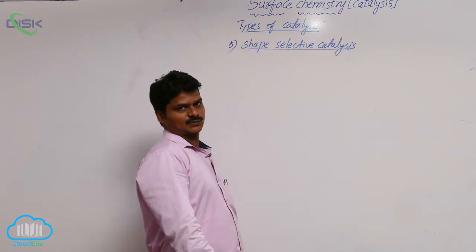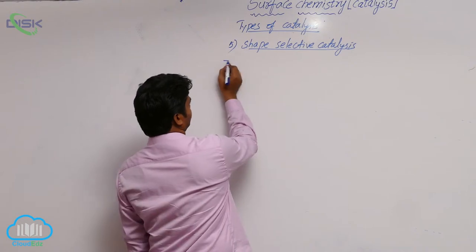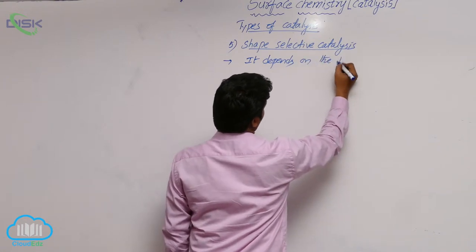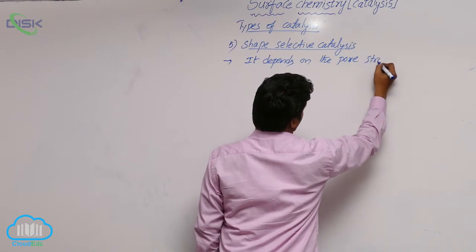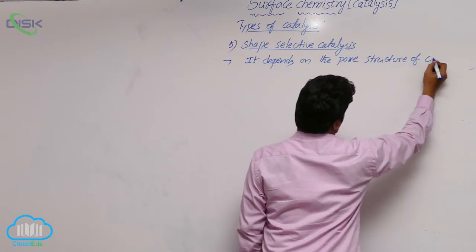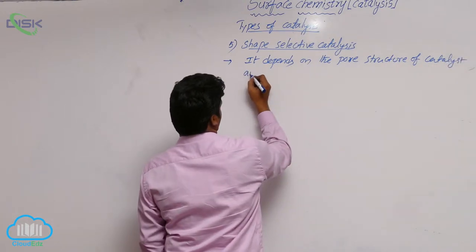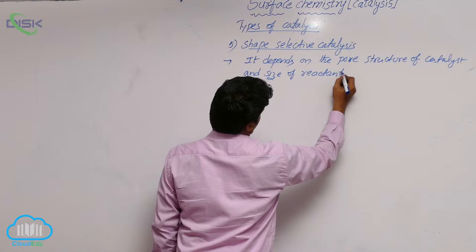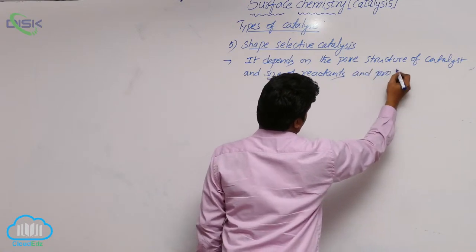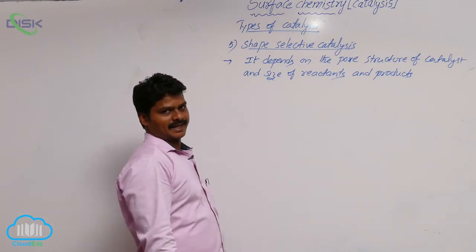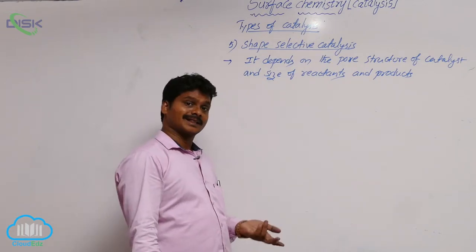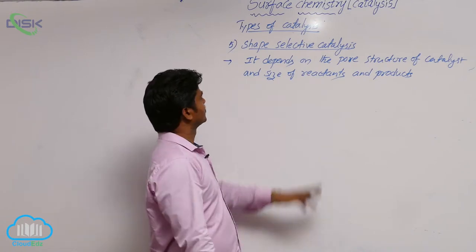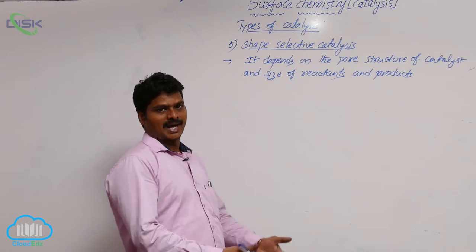Shape selective catalysis. What is this? This catalysis depends on the pore structure of the catalyst and the size of reactants and products. A catalysis reaction which depends on the pore structure of the catalyst and the size of the reactants and products is called shape selective catalysis.